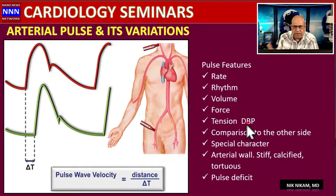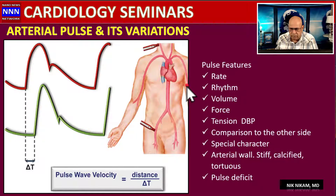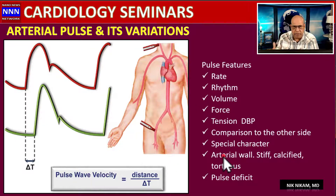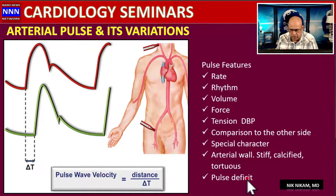Force describes how the pulse comes — slowly or forcefully. Tension relates to diastolic blood pressure; a high diastolic pressure causes the pulse to linger. We also compare pulses on both sides: subclavian steal syndrome can cause a weaker pulse on the left compared to the right. In elderly patients, calcified, stiff, non-compliant, and tortuous arterial walls can produce very high systolic blood pressure readings.